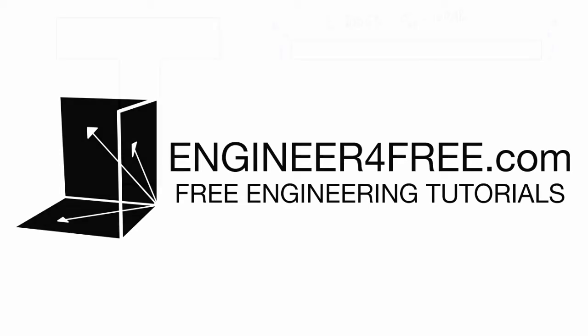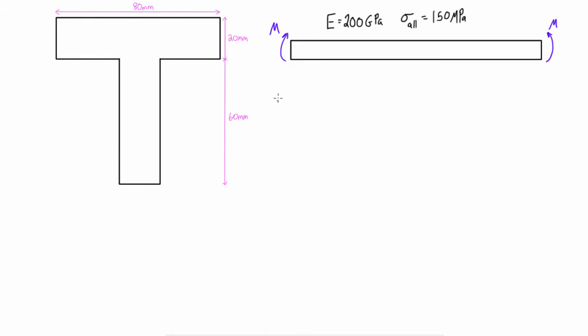All right guys, welcome back. In this video we're looking at example number two for pure bending in the elastic range. In this case we're looking at a T-shaped prismatic member. This is the end view of our member and this would be our side view. We're applying some pure bending here and we have an allowable stress of 150 megapascals. What we want to do is figure out the maximum internal bending moment that we can develop without surpassing this.